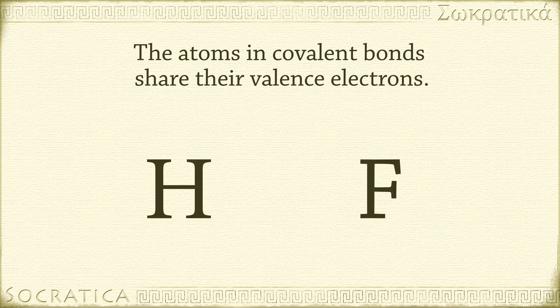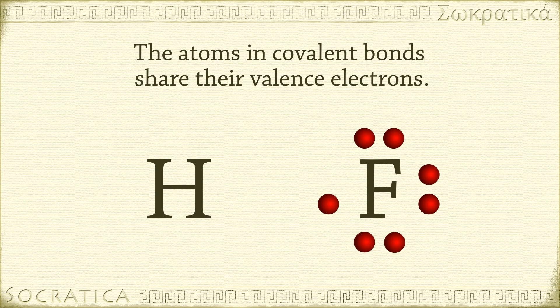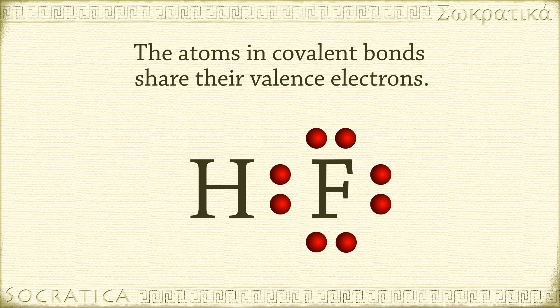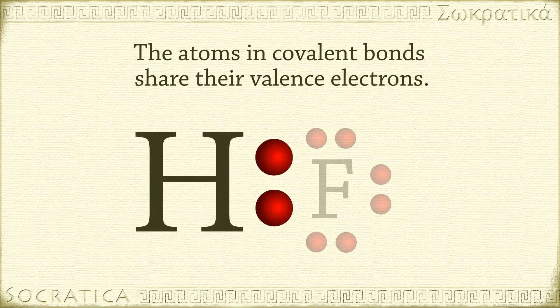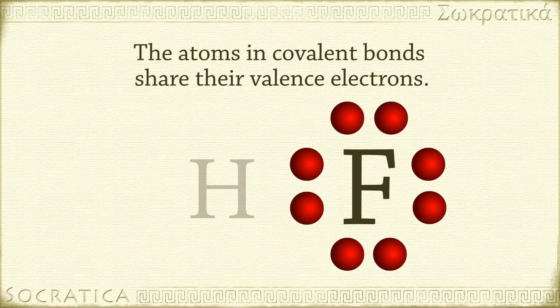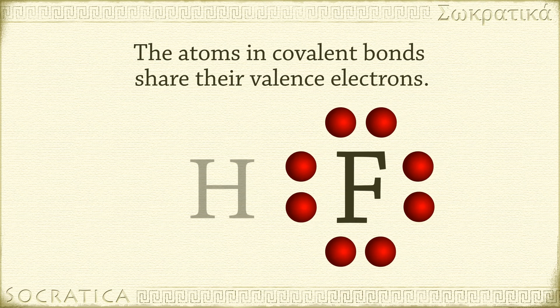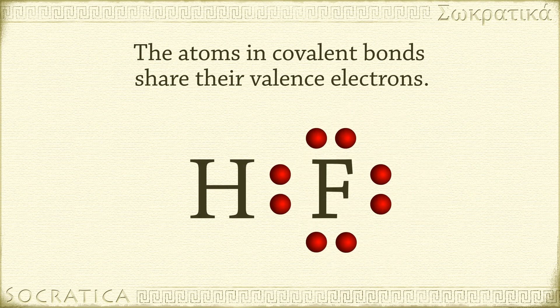Hydrogen fluoride is a molecule with a single covalent bond formed between two atoms. Fluorine has seven valence electrons and hydrogen has one. By sharing two electrons in a bond, hydrogen now has two valence electrons and has the same electron configuration as the noble gas helium. Fluorine now has eight valence electrons and has the same electron configuration as the noble gas neon. We can replace those two shared electrons in the diagram with a single line, representing the single covalent bond.